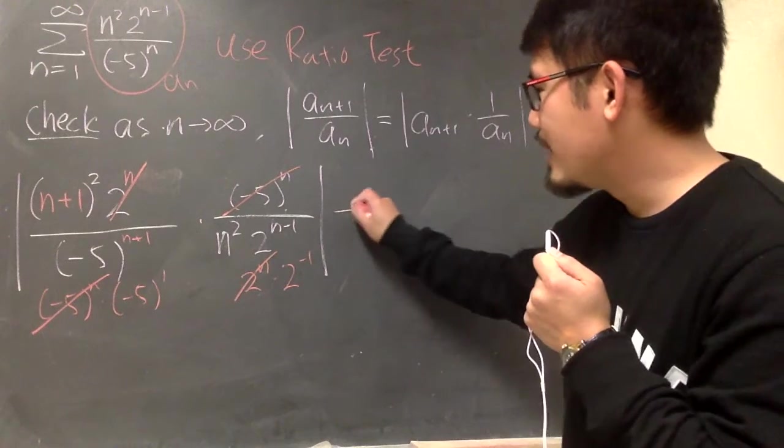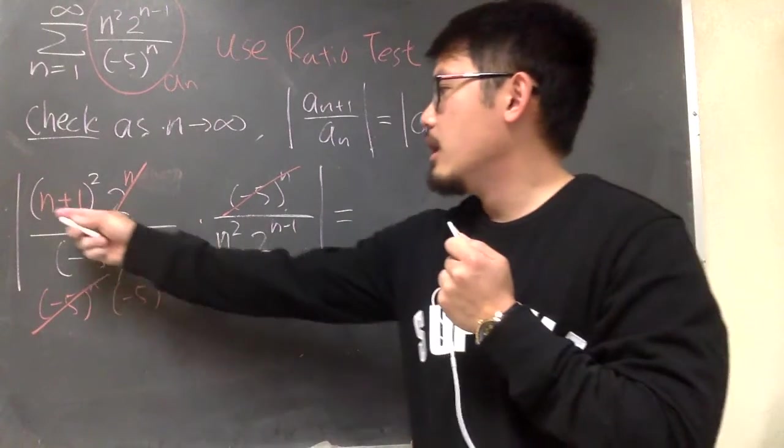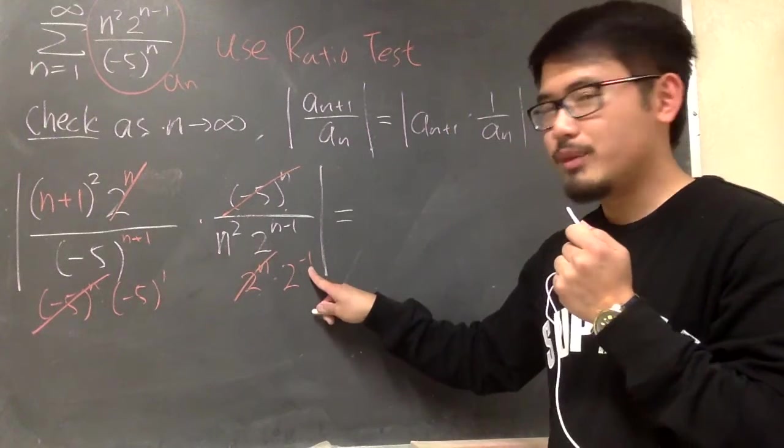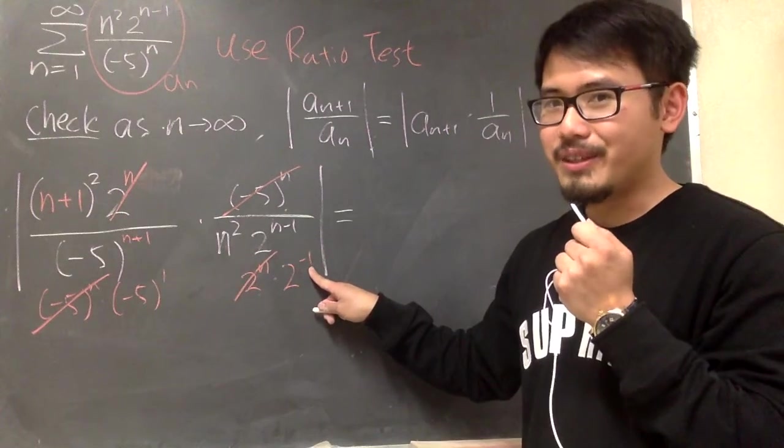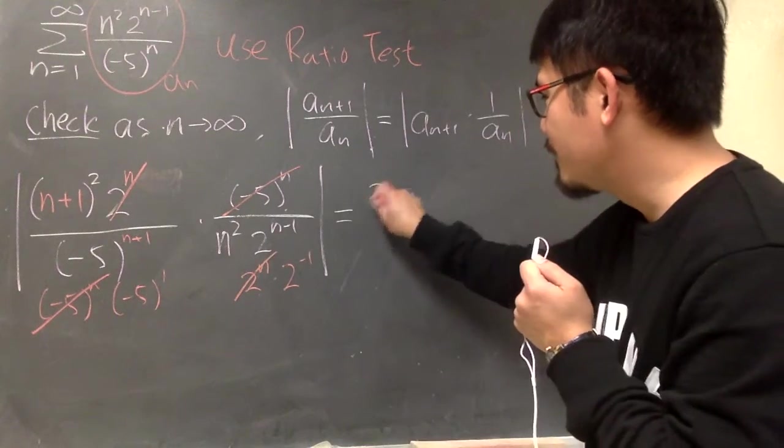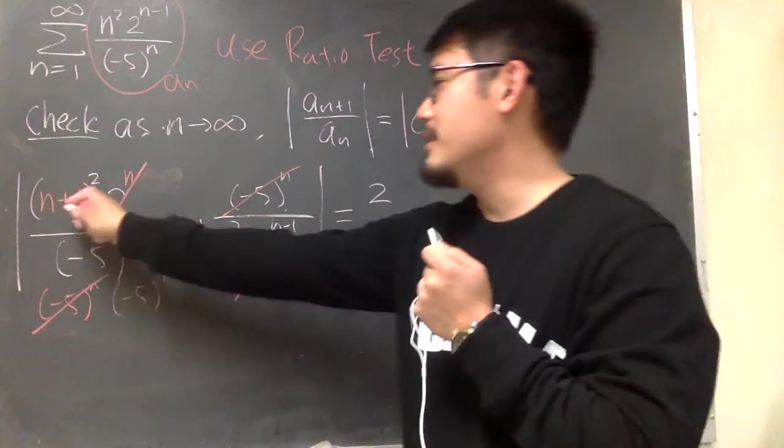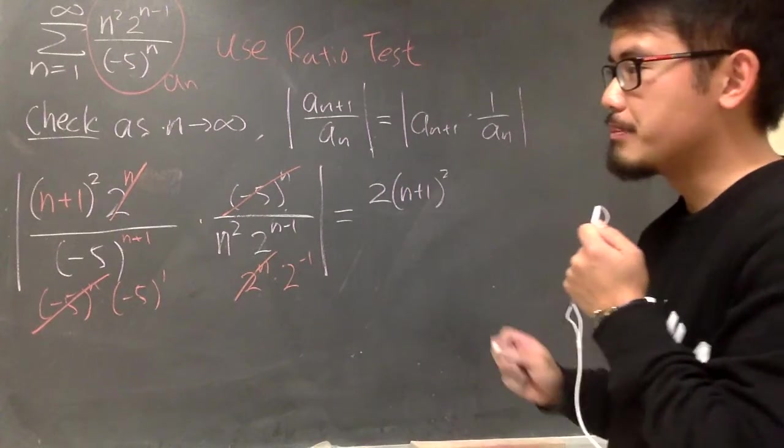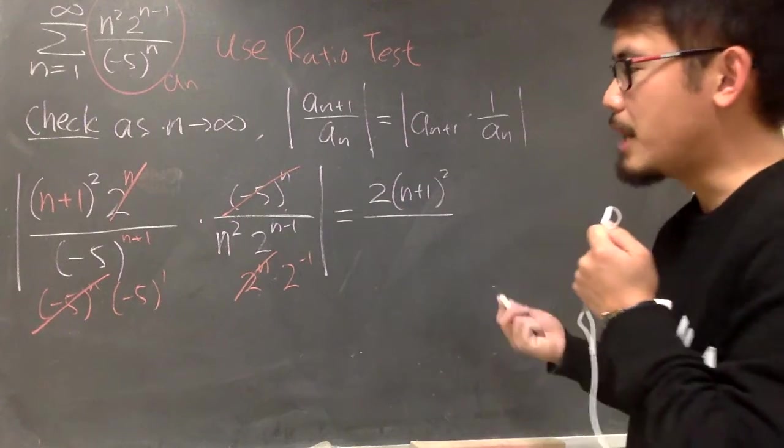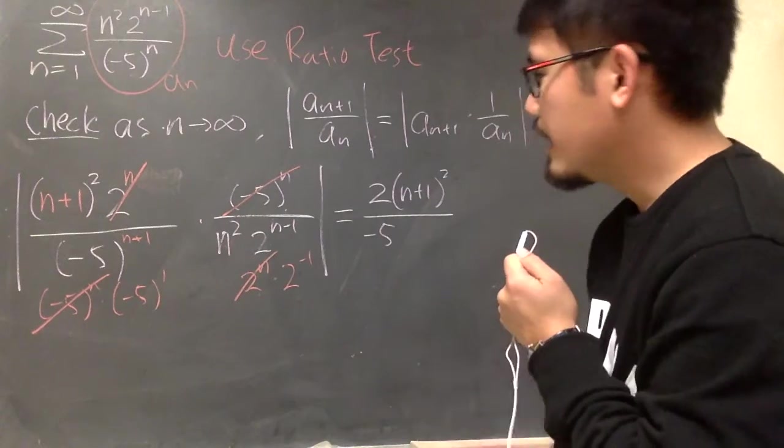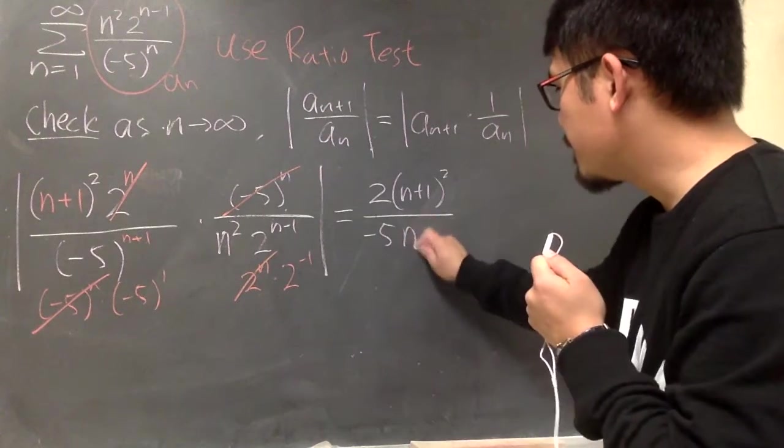So that's pretty much all the cancellation we can do. And now let's put down all the things that we have left. This right here is 2 to the negative 1 power in the denominator. So in fact, we have to bring this to the top. So let me put down that 2 first. And then we have the parentheses n plus 1 to the second power. On the bottom, we have this negative 5, and then we have this n squared.